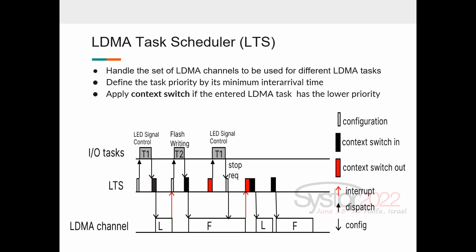We proposed the LTS to handle the set of LDMA channels to be used for different LDMA tasks. It defines the task priority by its minimum inter-arrival time. In this picture, the LTS dispatches the non-offloaded part to processor. After finishing the input-output task, the LTS configs the offloading part to the LDMA channel after context switch-in. The LDMA task sends an interrupt to LTS upon termination. When the second time the LED signal control task coming, because it has higher priority than flash writing, it will send a stop request to the LTS and do context switch-out. After finishing the LED signal control task, the flash writing task switch-in and continue.